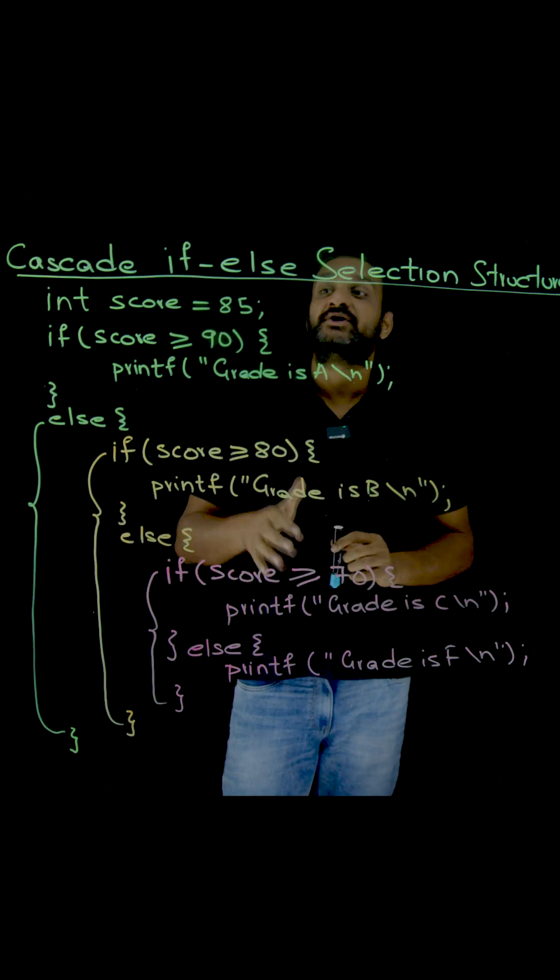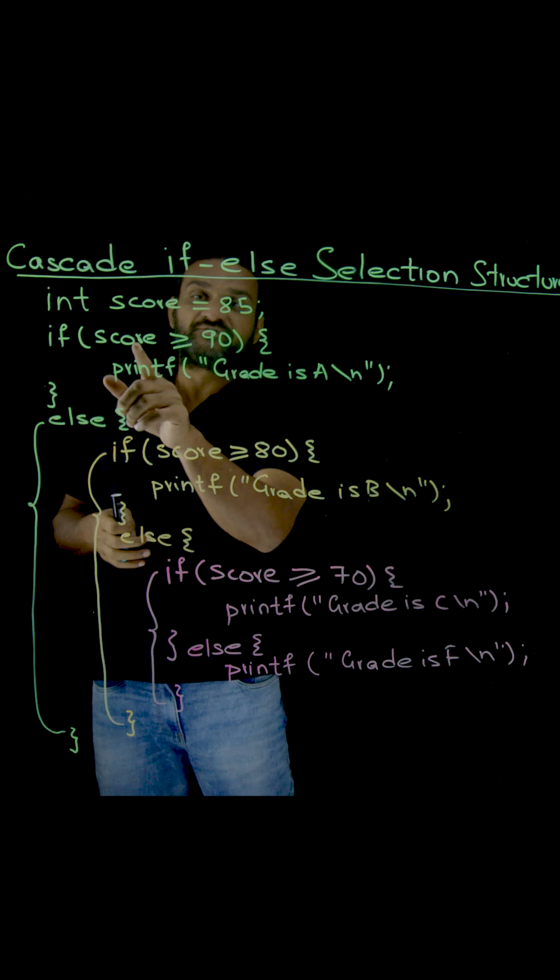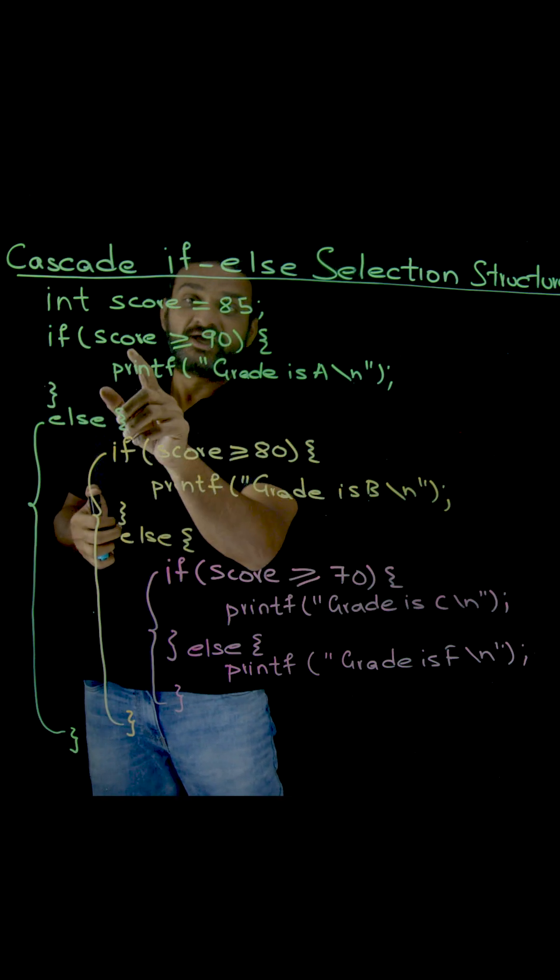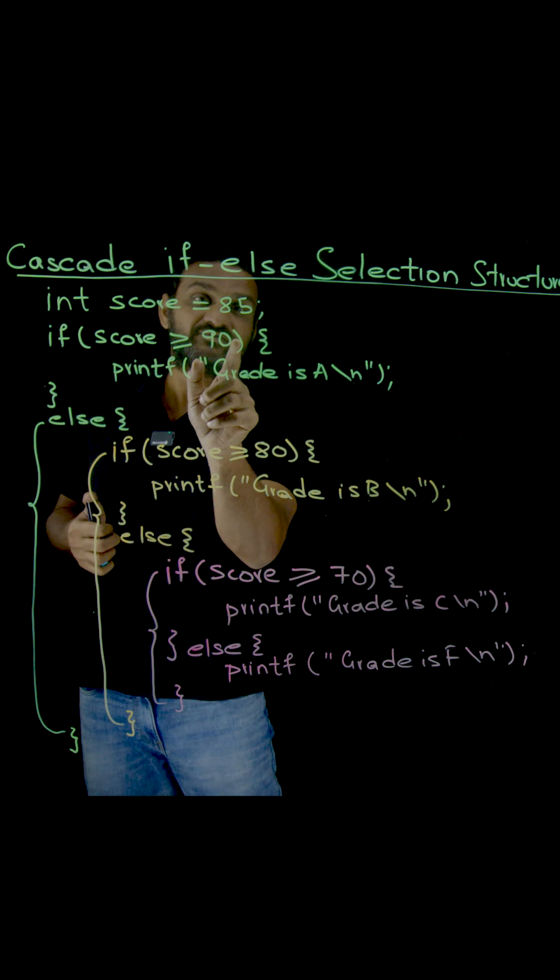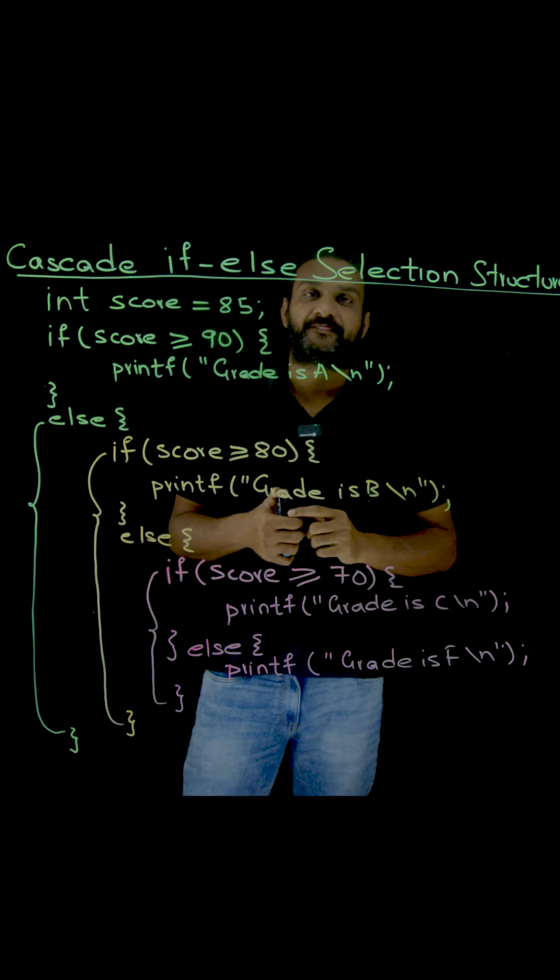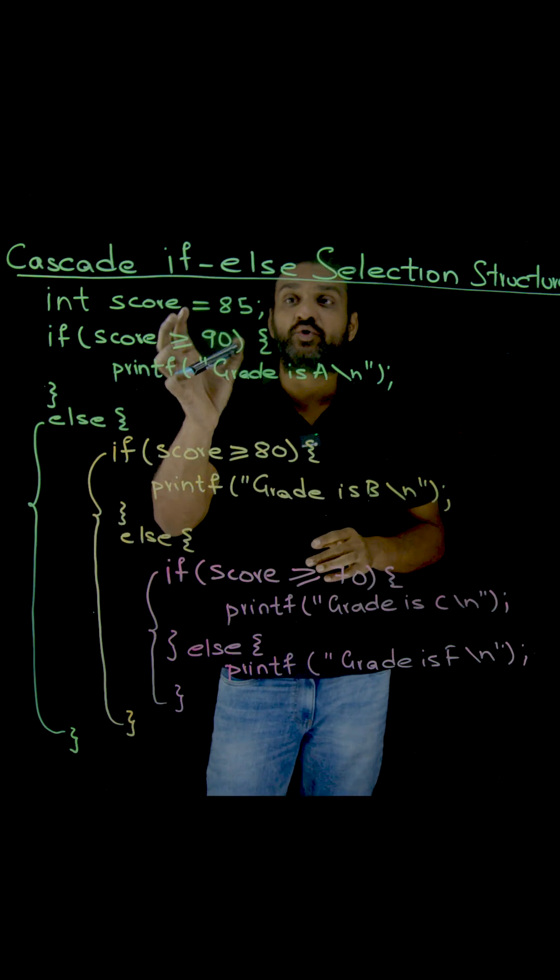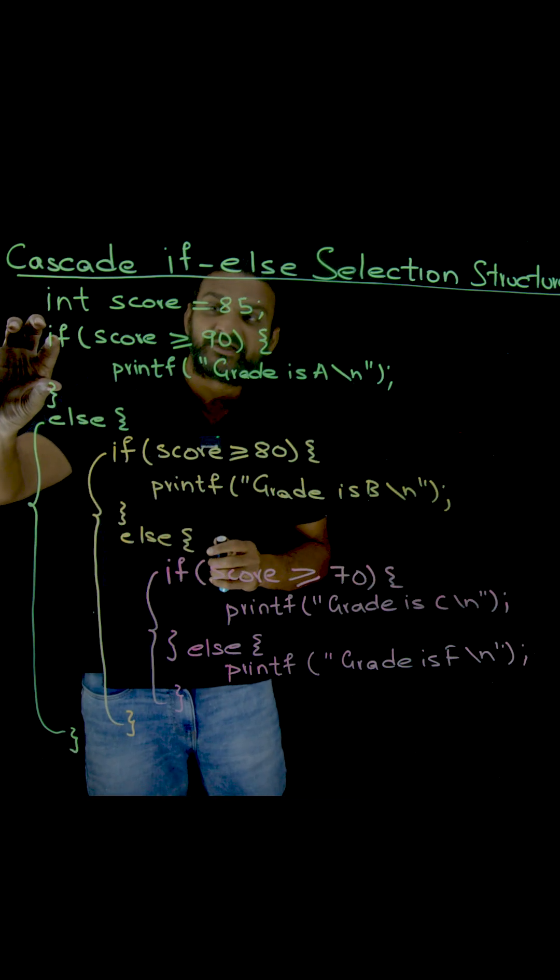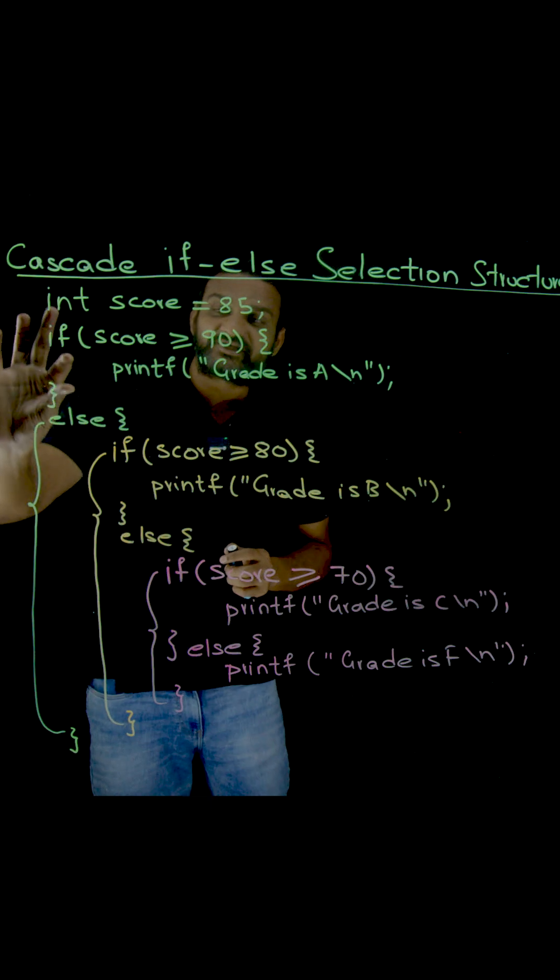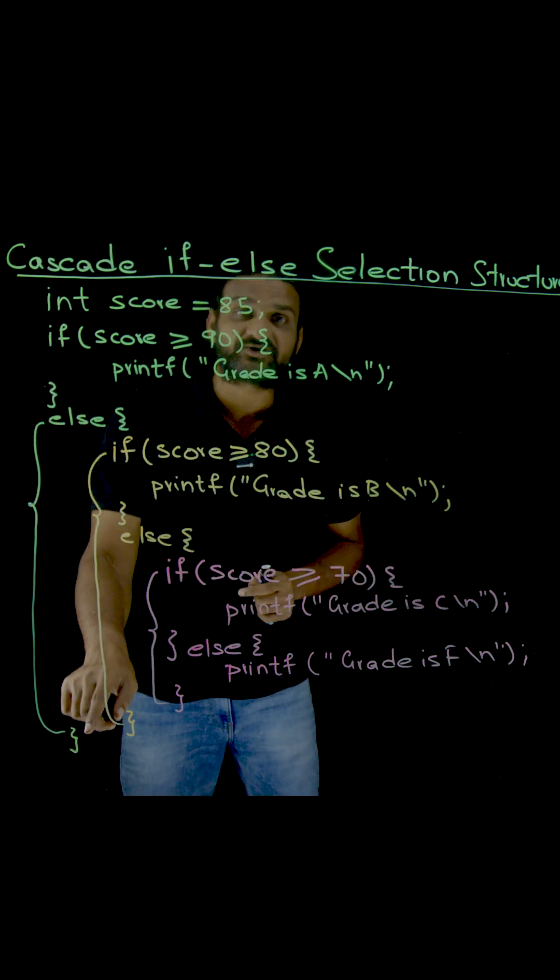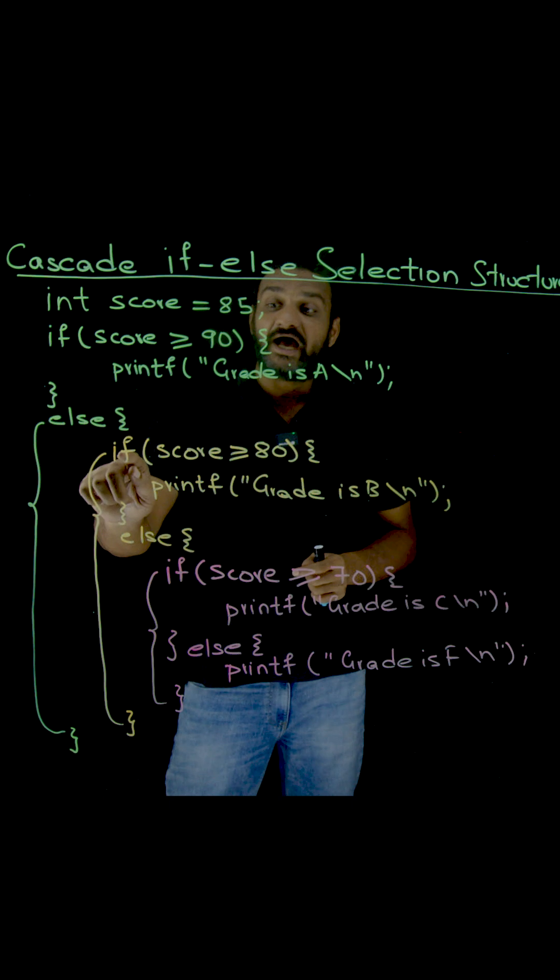How that can be done? First, the multiple alternatives are provided. If the score is greater than or equal to 90, then we have to provide a grade A. Now is this true? No, it is not true. Now we are going into the else part of this if condition.